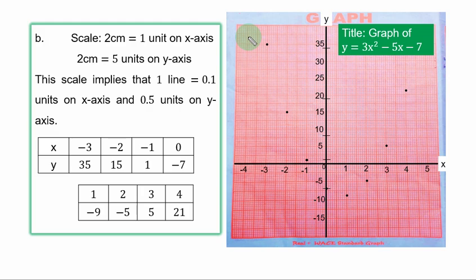Next part, part B, is to plot the graph. Let us start by restating the given scale. 2 cm to 1 unit on s axis. 2 cm to 5 units on y axis. This graph I'm using, each box is 5 lines. So by default, that 5 lines means 1 cm.